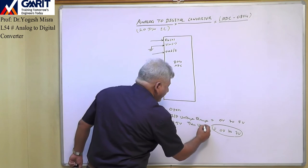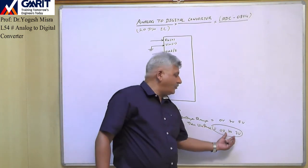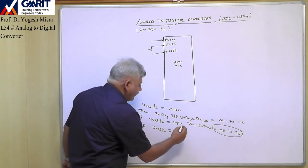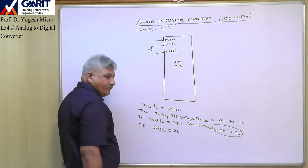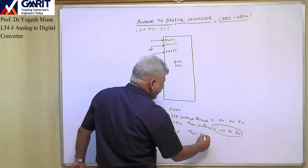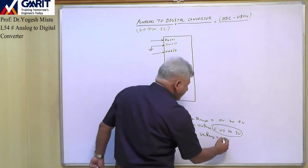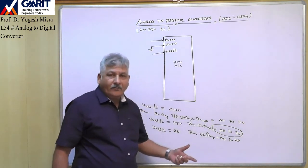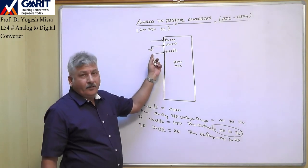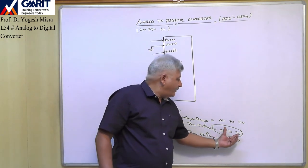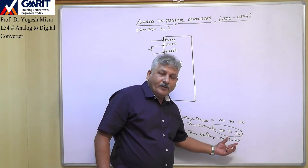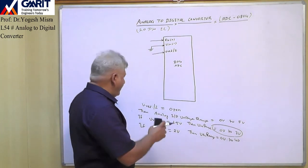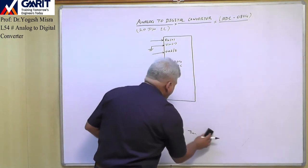If V_reference by 2 is equal to 1.5V, then the input voltage range is from 0V to 3V. Similarly, if V_reference by 2 is equal to 2V, the voltage range will be from 0V to 4V, because the maximum expected voltage of 4V divided by 2 gives 2V. By adjusting this input range, we are basically changing the step size of the ADC.